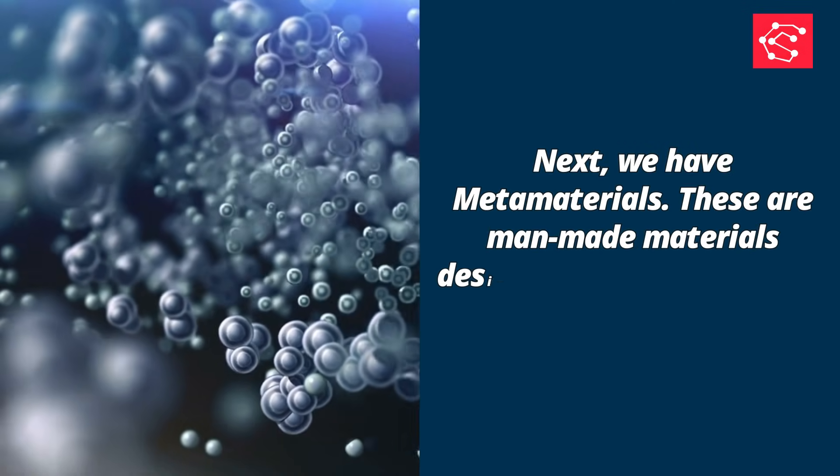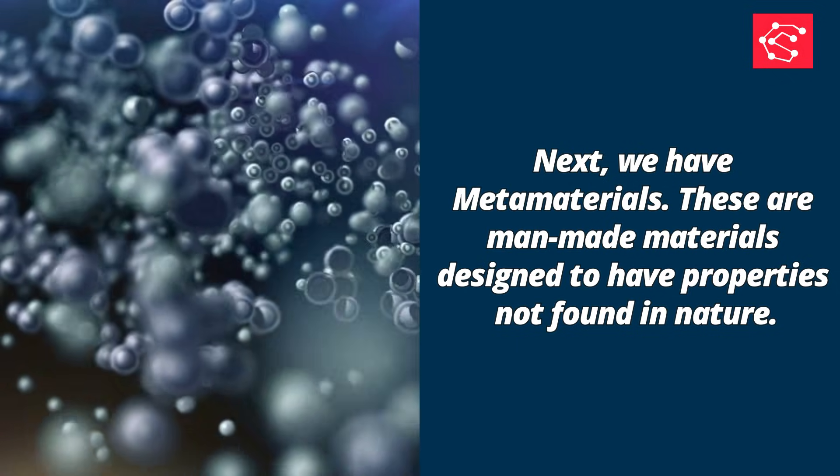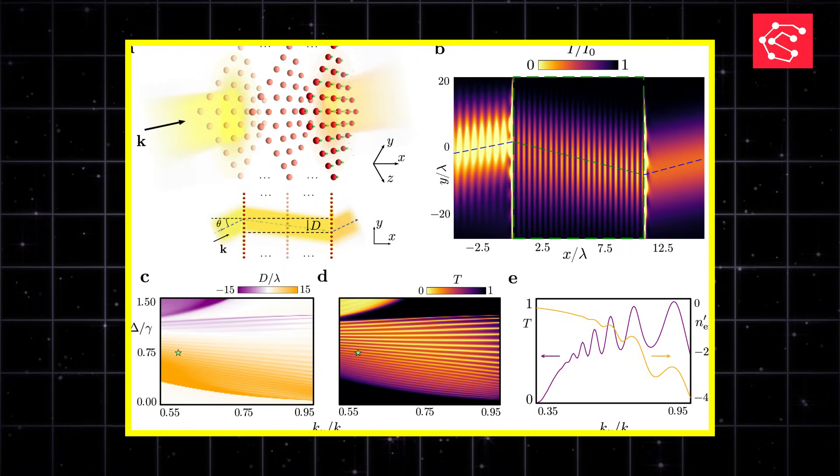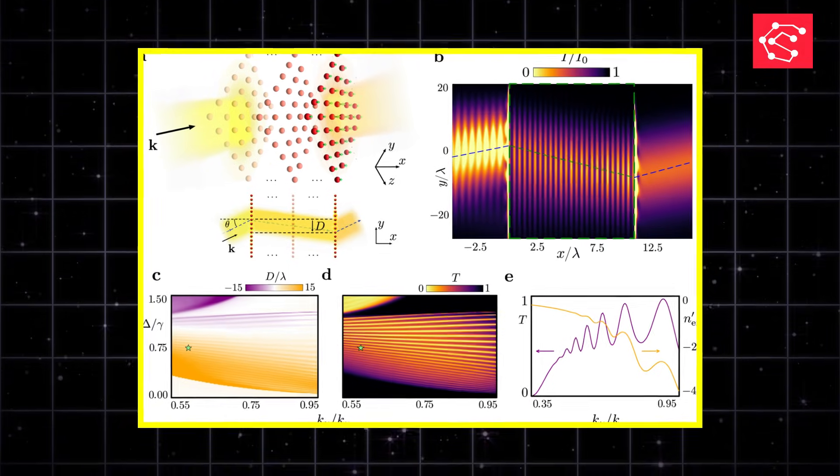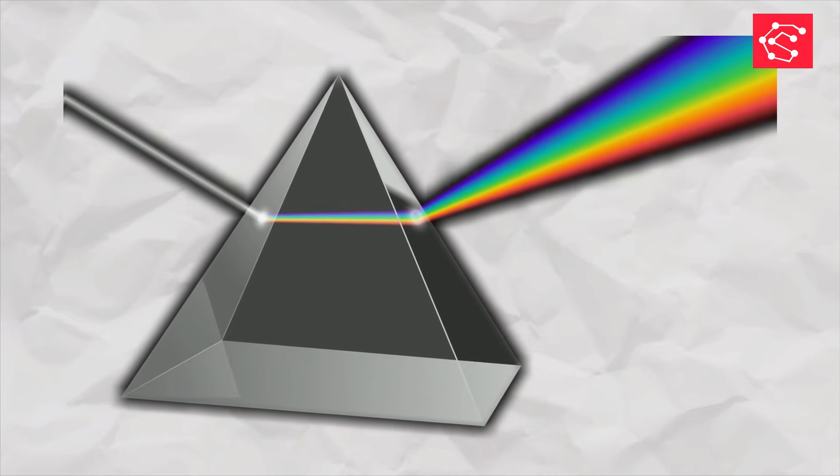Next, we have metamaterials. These are man-made materials designed to have properties not found in nature. A fascinating example is negative-index photonic crystals that operate in the visible spectrum. These materials bend light in ways traditional materials cannot.